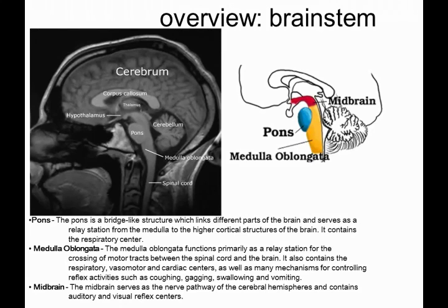The medulla oblongata functions primarily as a relay station for the crossing of motor tracts and also contains respiratory, vasomotor, and cardiac centers, as well as reflex activities such as coughing, gagging, swallowing, and vomiting. All the very basic bodily functions are located there.